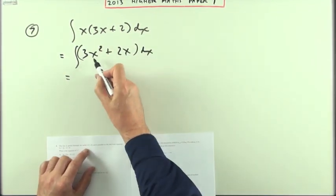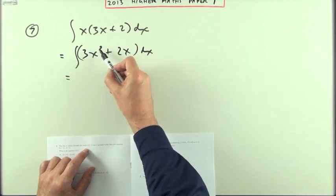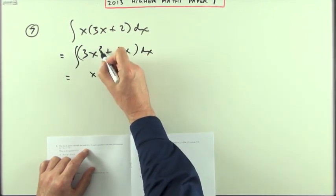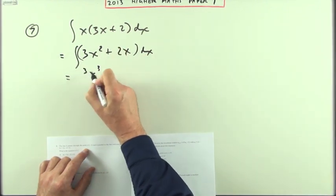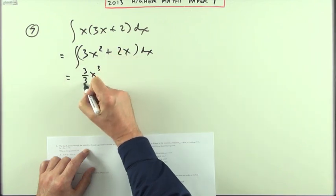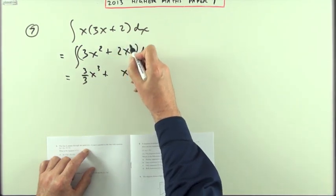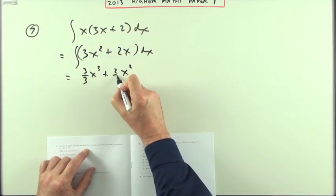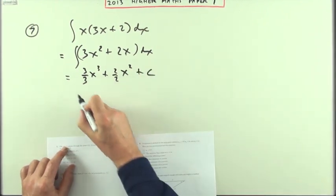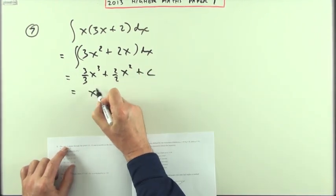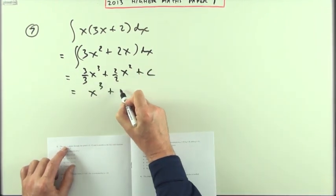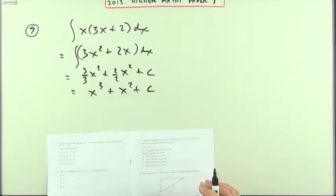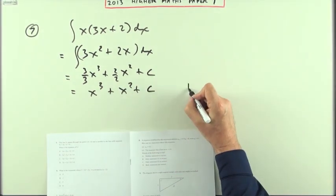Now they're in separate terms with the coefficient and the power. It's simply a case of add one to the power — up to three — show that working, divide by the three. Add one to the power for the next term — up to two — divide by that two, and don't forget the plus C. So that's just going to be x cubed plus x squared plus C, which is B.